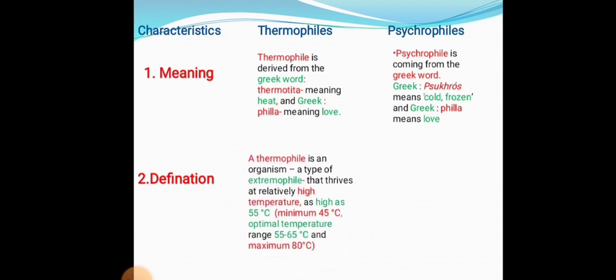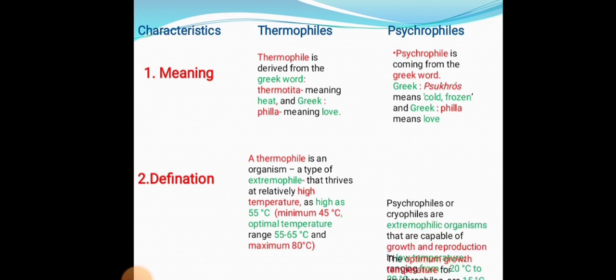The definition of thermophiles: a thermophile is an organism and a type of extremophile. Thermophiles thrive at relatively high temperatures — a minimum of 45 degrees centigrade, an optimal temperature range of 55 to 65 degrees centigrade, and a maximum temperature of 80 degrees centigrade.